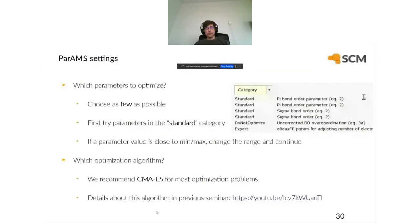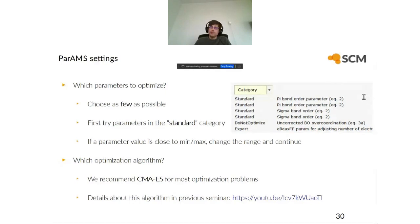The next part is the parameters — which ones to optimize. ReaxFF has many parameters divided into categories. The 'standard' category contains the parameters you're most likely to want to optimize. In general, we recommend choosing as few parameters as possible to make the problem easier. If possible, start from a previous ReaxFF force field that works for something and just fine-tune it, rather than starting completely from scratch. If a parameter value is close to its minimum or maximum allowed value, you can change the range and continue.